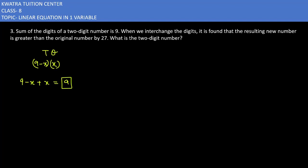Now here you have information: when we interchange the digits, it is found that the resulting new number is greater than the original number by 27. The original number here would be 10 times (9 minus x) plus x, so your value is 90 minus 10x plus x, which equals 90 minus 9x.